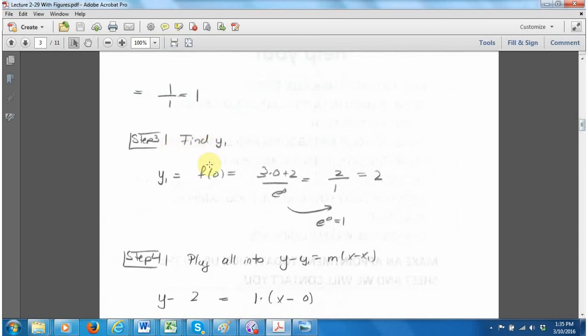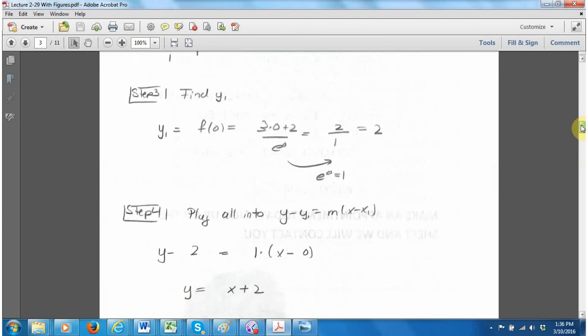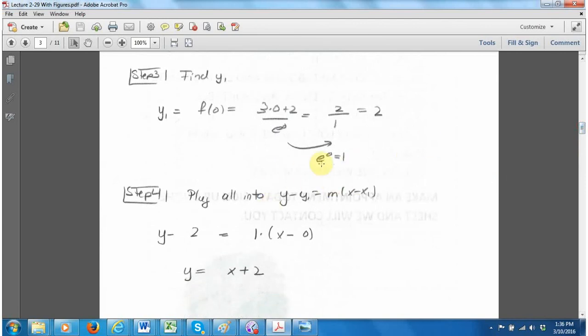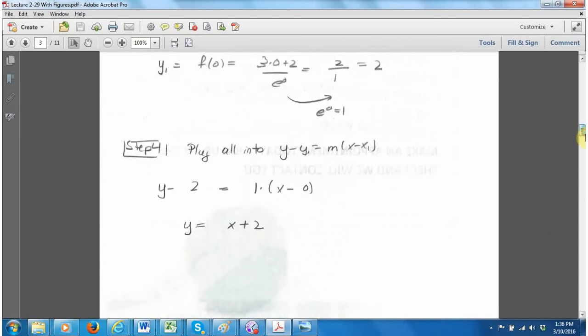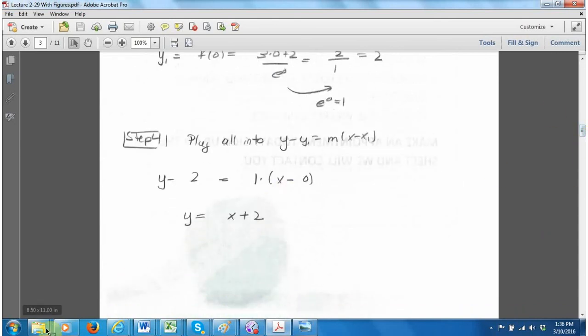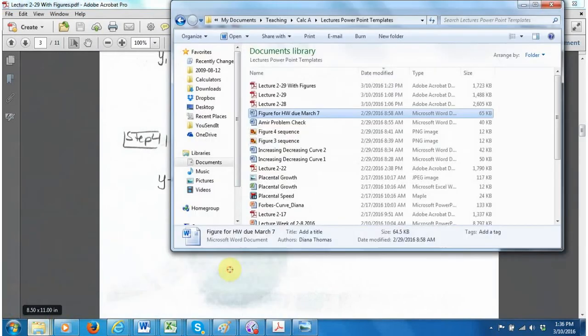y_1 - steps 2 and 3 can be exchanged - is found by plugging in x equals 0 into the original expression. I get a nice number, which is 2. Then I plug everything into the slope formula. I get y minus y_1 is m times (x minus x_1), and I'll have a nice looking line like y equals x plus 2. Now you will ask yourself, how could that possibly be right? And it turns out that indeed it is.